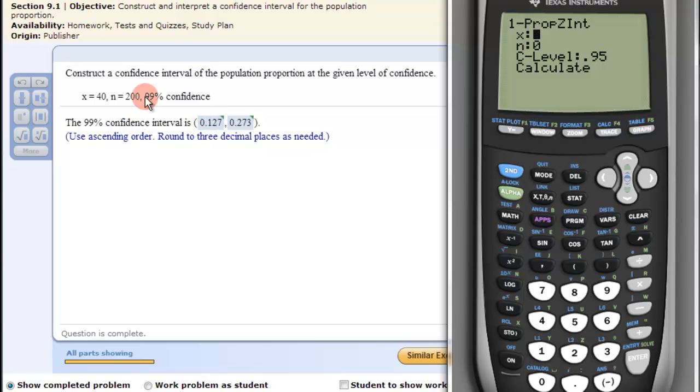So we have the X is 40, hit enter. Our N is 200. And then we just fill in our confidence interval, 99%, 0.99.